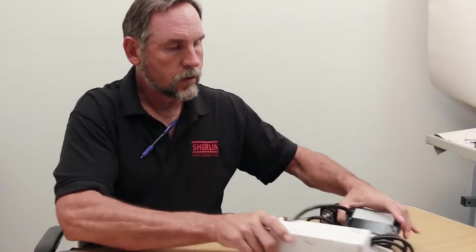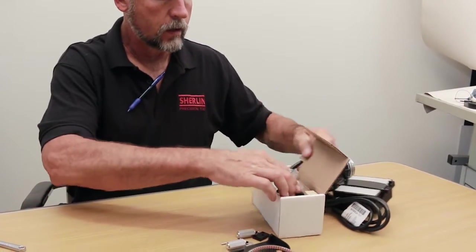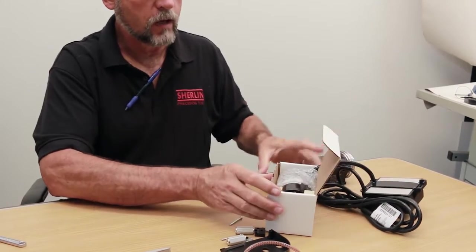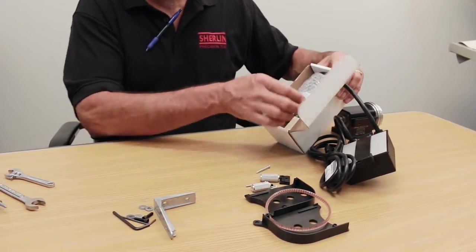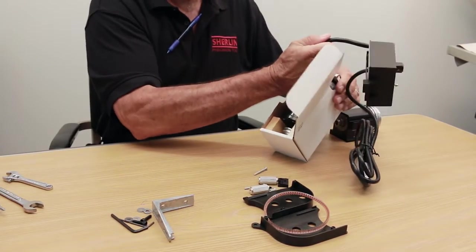Next we have our speed control and our motor. The motor comes and it should have two pieces of wood on the side like this to keep it from being damaged and shipping. Let's take this guy out of here.